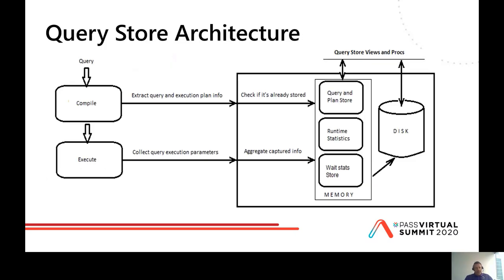This slide shows the Query Store architecture. When a query is compiled in a database where Query Store is enabled, Query Store checks whether it has the information for that query stored or not. If not, it stores a single row for each compiled query. It also checks for the execution plan for that query. If this is a new plan, it stores plan info into the plan store — a single row for each query, a single row for each plan. By default, up to 200 plans can be stored in Query Store.